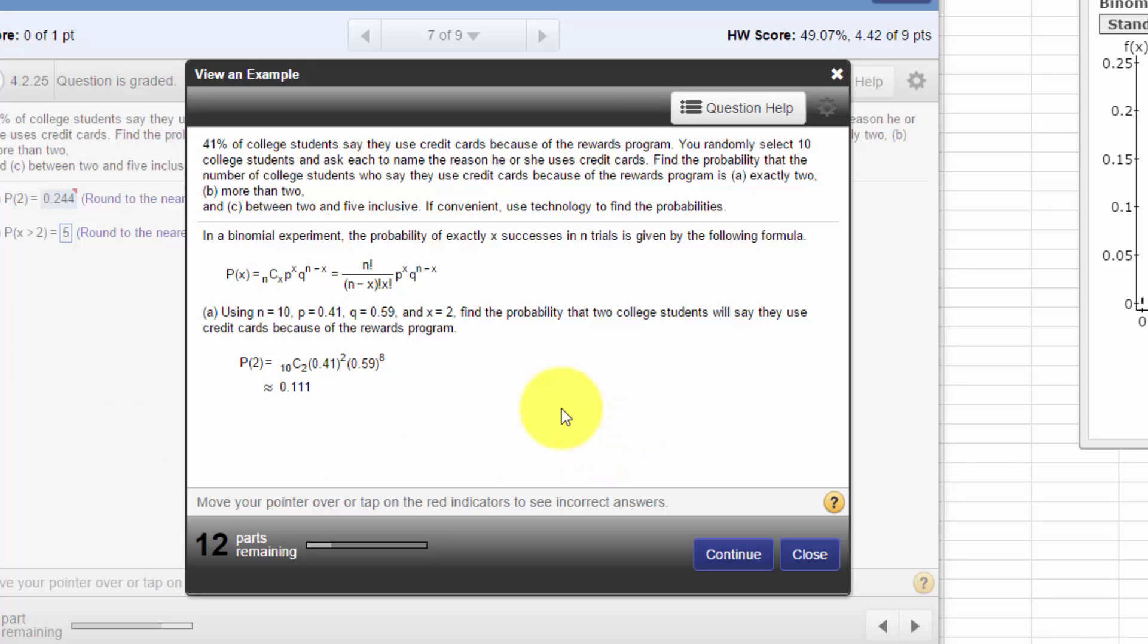It's something you can actually use—this equation—plug it into your calculator or into Excel and solve for these probabilities. But StatCrunch is a whole lot faster. In this question we were told that 41% of students say they use credit cards because of the rewards program.